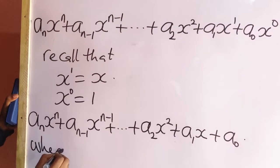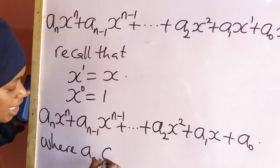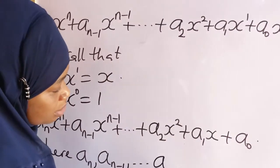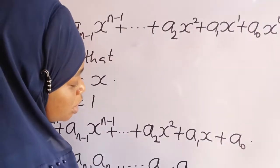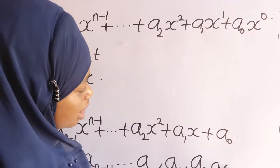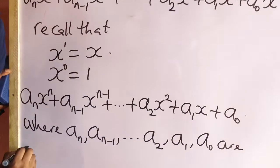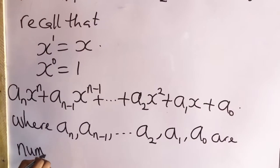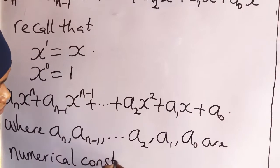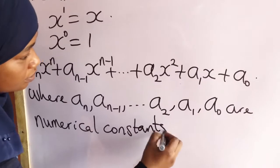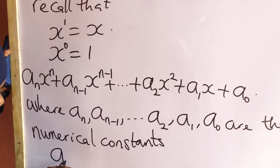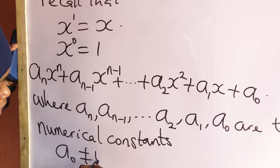Here, a_n, a_(n-1), a_2, a_1, and a_0 are the numerical constants. And a_n must not be equal to 0.